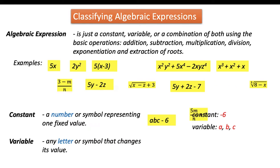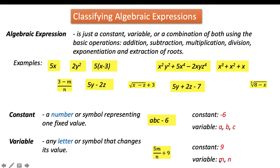Let's have another example: 5m over n plus 9. The constant here is 9, and the variables are m and n.